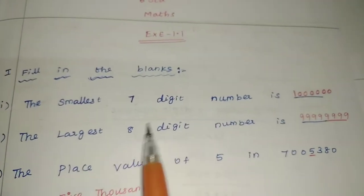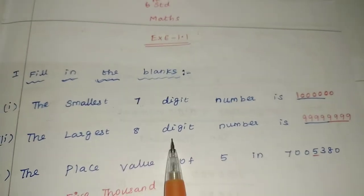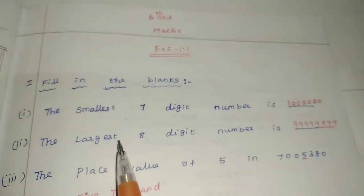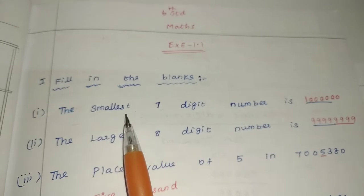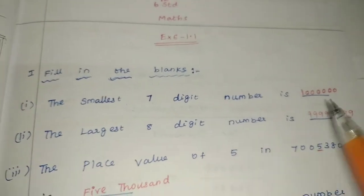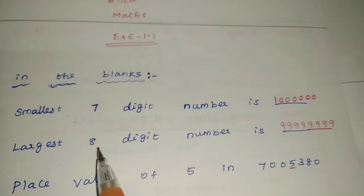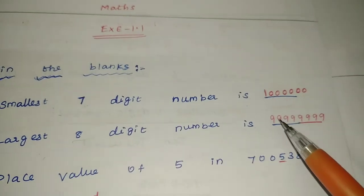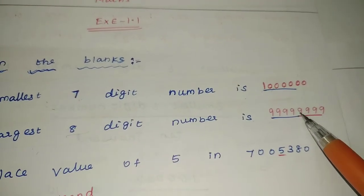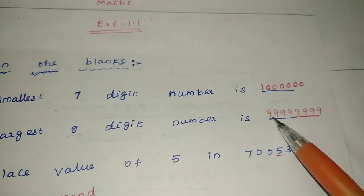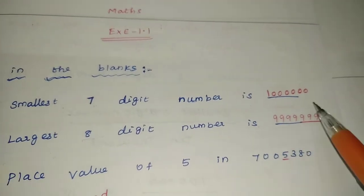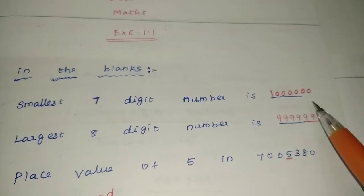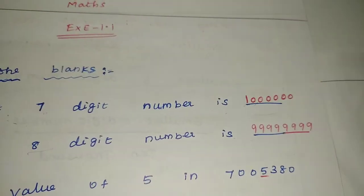Next: the largest 8-digit number is dash. For the largest number, the clue is: smallest is 1, largest is 9. So for 8 digits, all digits are 9. How many digits? 8 digits — 9, 9, 9, 9, 9, 9, 9, 9. So 8 digits, all nines: 9,99,99,999. Clear?